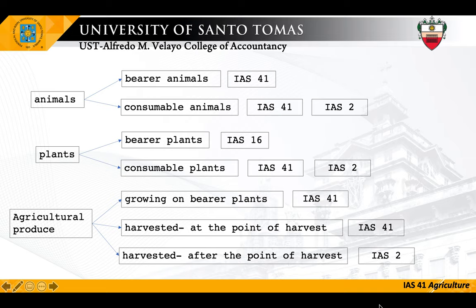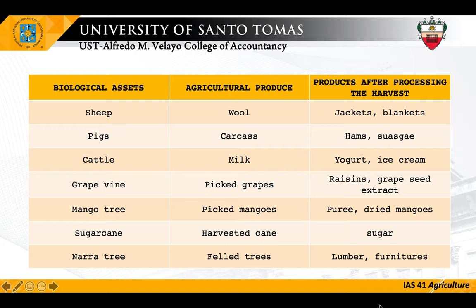Examples: biological asset — sheep; agricultural produce — wool; products after harvest — blankets or jackets. Another example: biological asset — grapevine; agricultural produce — harvested grapes; products after harvest — raisins, grapeseed extracts, or wines. Also, a Nara tree plantation is the biological asset; agricultural produce — felled tree; products after harvest — furniture or lumber.